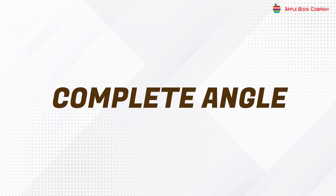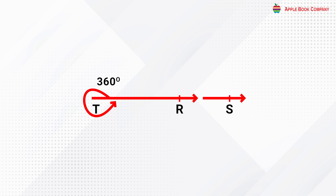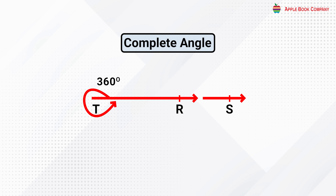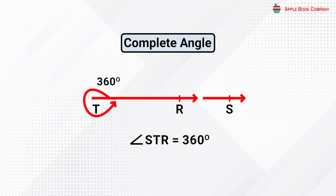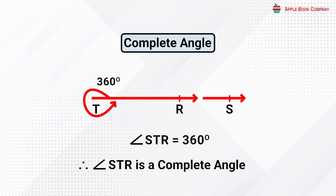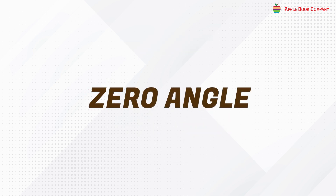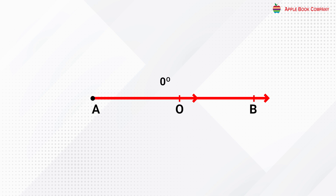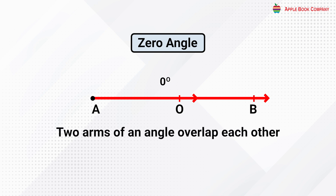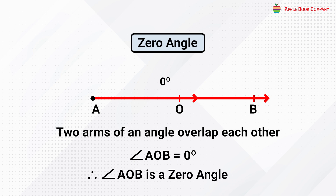Complete angle: an angle of measure 360 degrees is called a complete angle. In the given figure, angle STR is equal to 360 degrees; therefore angle STR is a complete angle. Zero angle: an angle of measure 0 degrees is called a zero angle. It is formed when the two arms of an angle overlap each other. In the given figure, angle AOB is equal to 0 degrees; therefore angle AOB is a zero angle.